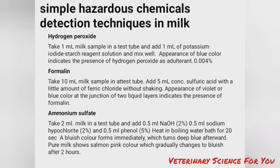Detection of simple hazardous chemicals in milk. For hydrogen peroxide — take 1 ml milk sample in a test tube and add 1 ml of potassium iodide starch reagent solution and mix well. Appearance of blue color indicates the presence of hydrogen peroxide as an adulterant.